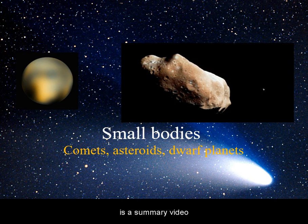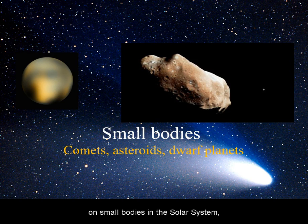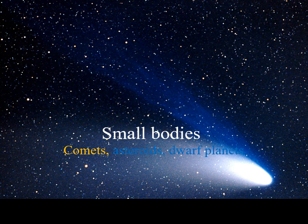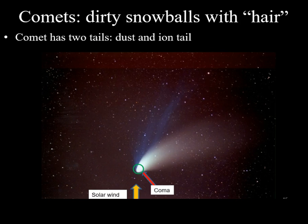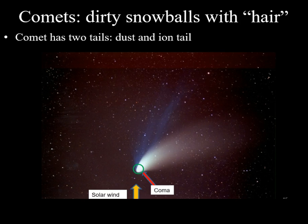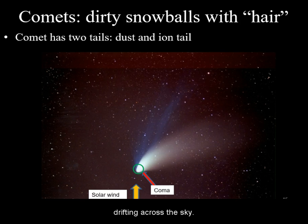This is a summary video on small bodies in the solar system, focusing on comets. The word comet comes from the Latin 'coma,' meaning hair. It derives from the appearance of the comet as a fuzzy object drifting across the sky.